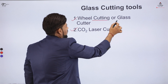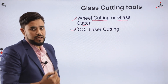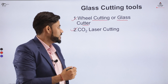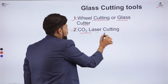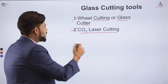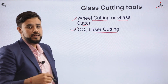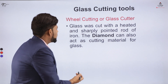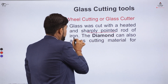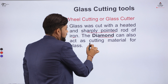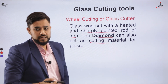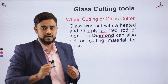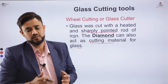Number one is the wheel cutter or glass cutter. With a glass cutter, we generally scribe a roller on the surface and then break the glass. The second is carbon dioxide laser cutting. The wheel cutter or glass cutter has a sharp pointed rod with a diamond that acts as the cutting material. With the help of the diamond roller, we scribe on the surface of the glass and ultimately break that surface to cut the glass.